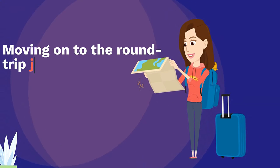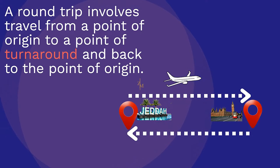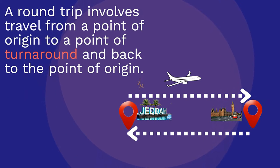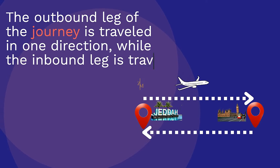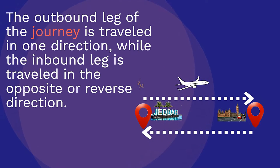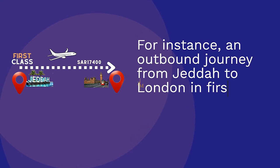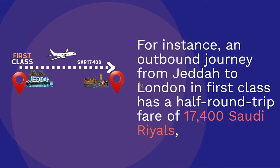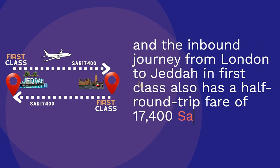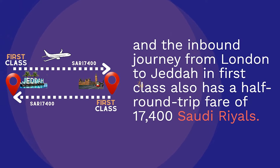Moving on to the round-trip journey type. A round-trip involves travel from a point of origin to a point of turnaround and back to the point of origin. The outbound leg is travelled in one direction, while the inbound leg is travelled in the opposite or reverse direction. For instance, an outbound journey from Jeddah to London in first class has a half-round-trip fare of 17,400 Saudi Riyals, and the inbound journey from London to Jeddah in first class also has a half-round-trip fare of 17,400 Saudi Riyals.